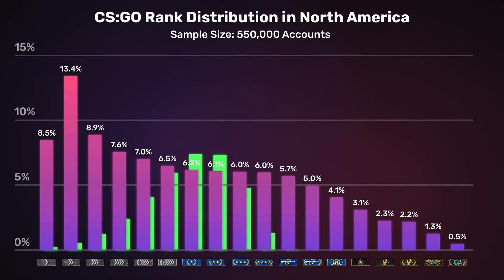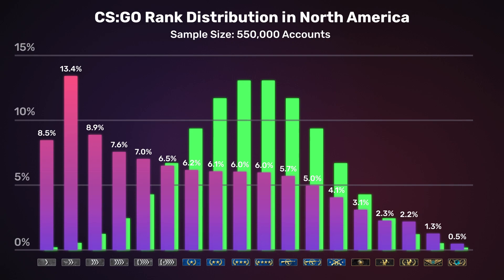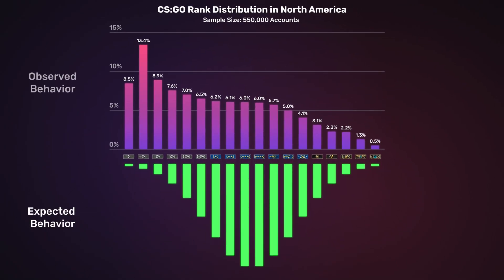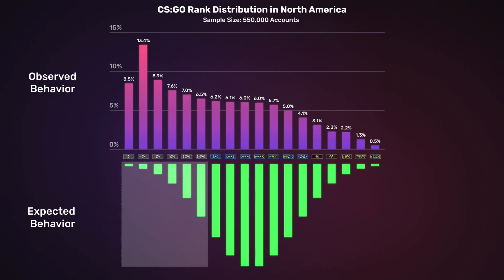But what about the overall shape of the NA graph? This is clearly quite far from the normal distribution we saw approximated in the European data. If we operate on the assumption that CSGO skill at least approximately follows a normal distribution, the shape of the ranks in North America is extremely concerning. We would expect lower ranks to be filled with players that are all relatively far outliers in terms of skill, but instead the majority of the playerbase has been pushed down to this rank region.